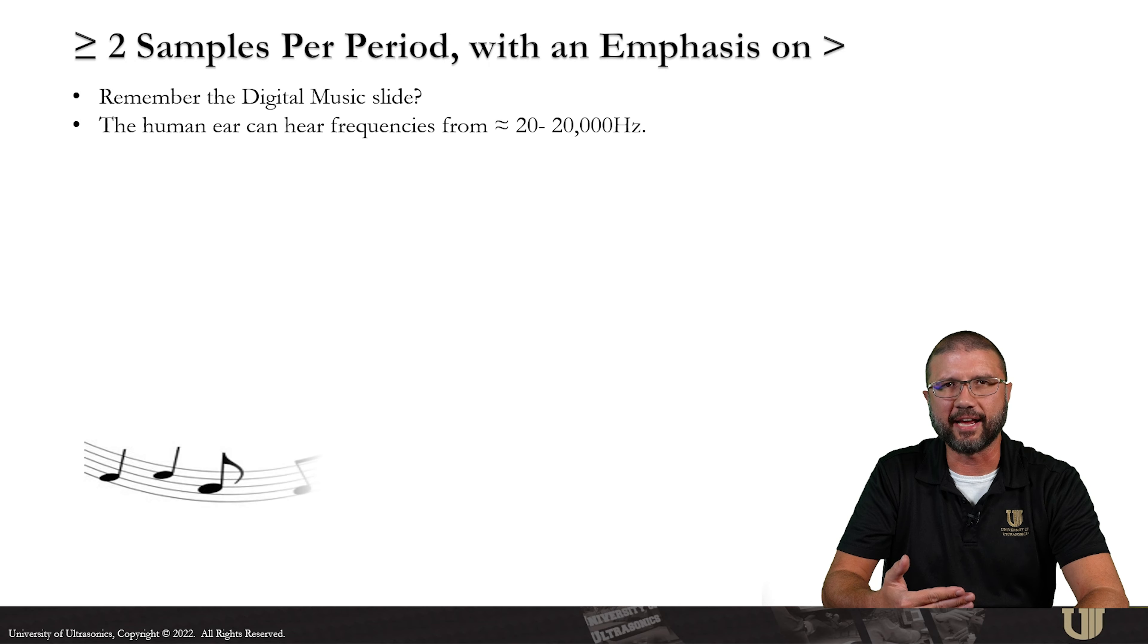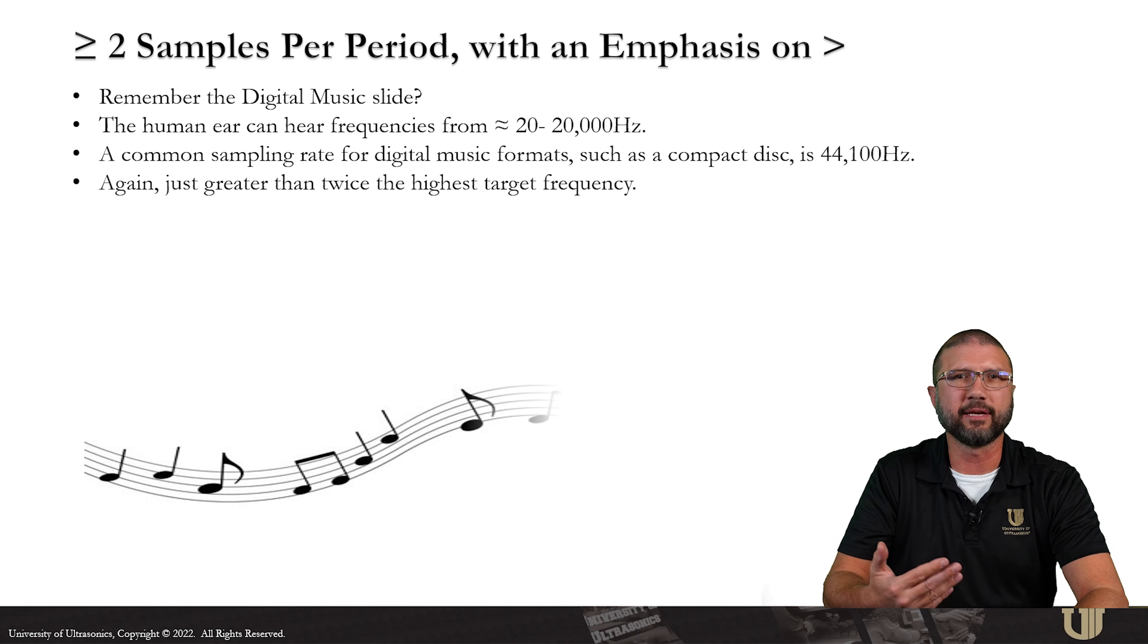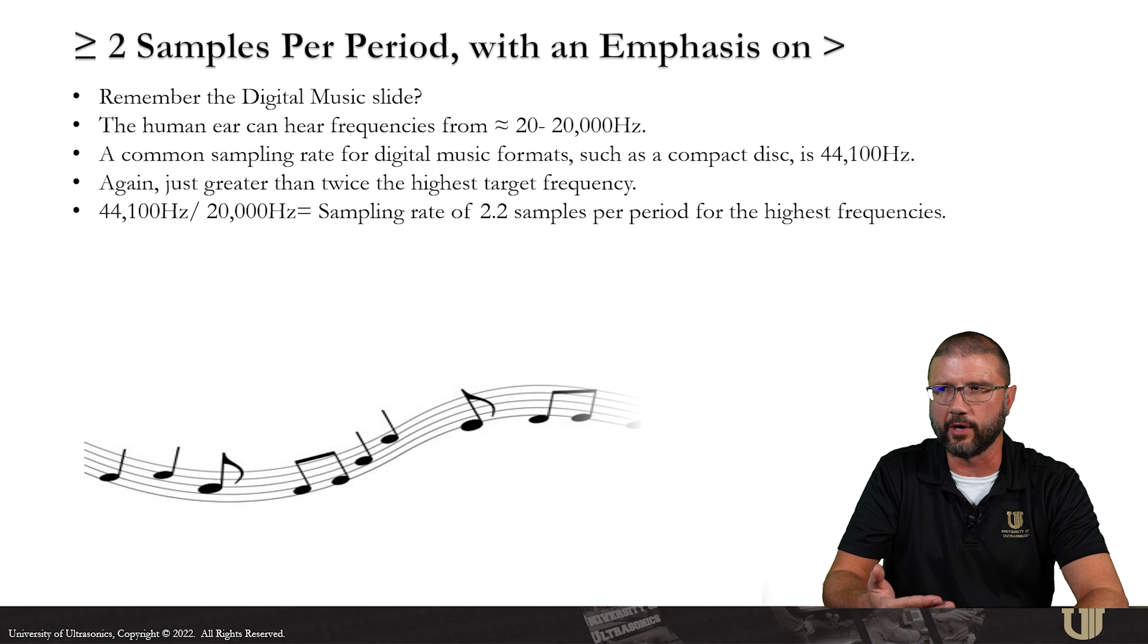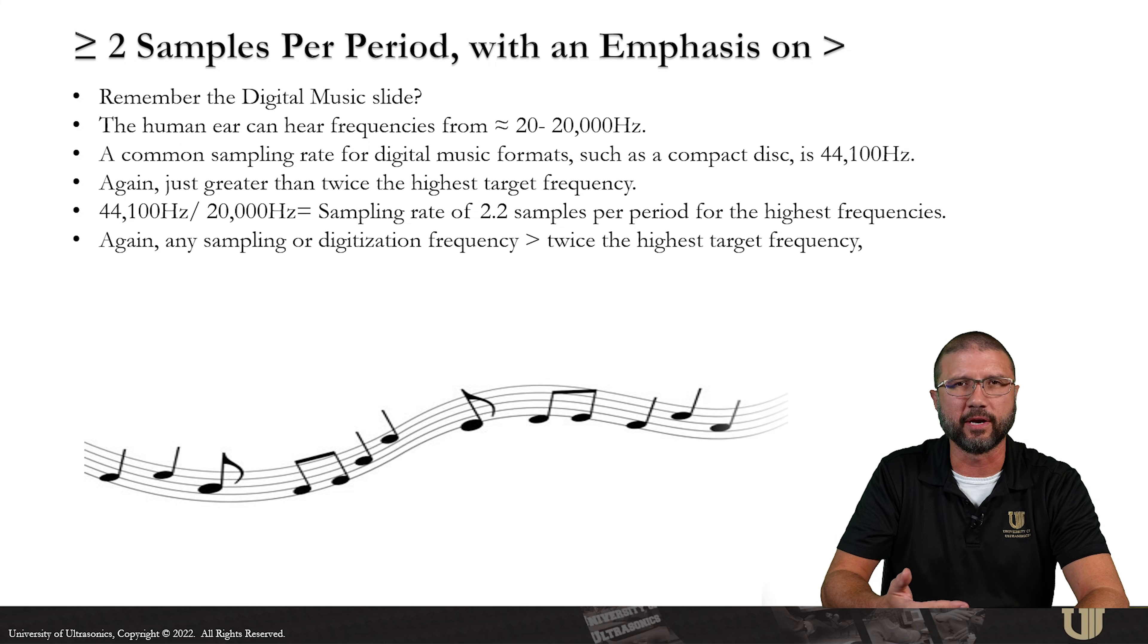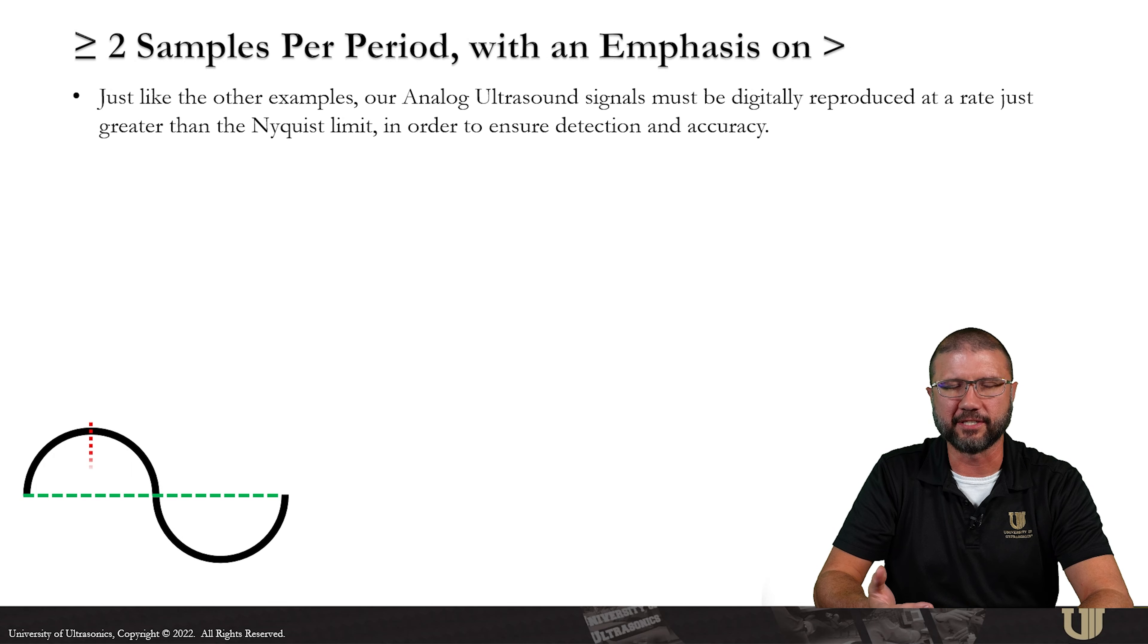The same thing happens with digital music. So 20,000 hertz was the highest frequency that we wanted to be able to represent in digital music. The digital sampling rate is typically 44,100 hertz. So if you divide those two, you're going to see that we get a sampling rate of about 2.2 samples per period. So again, Nyquist says any sampling frequency that is greater than twice the highest frequency that we want to find is going to make sure that we can find that signal. We've got to apply the same way of thinking for digitizing our A-scans.